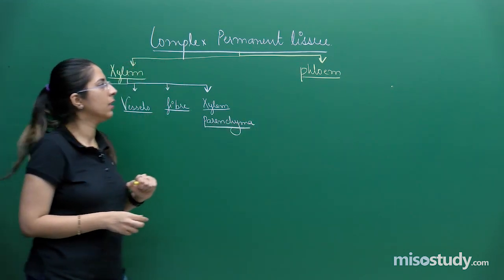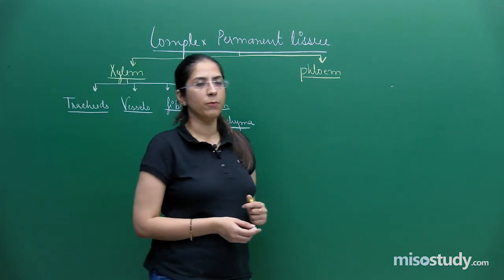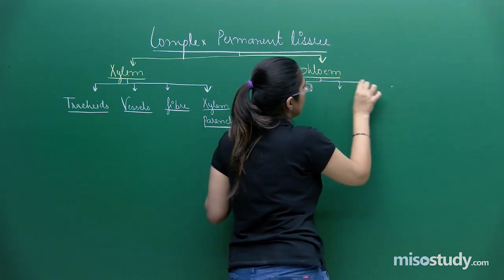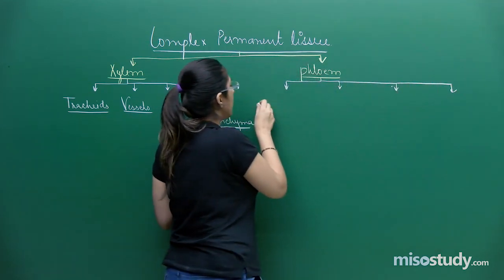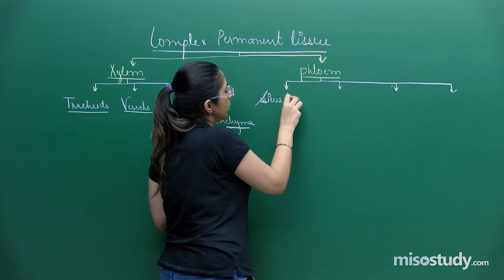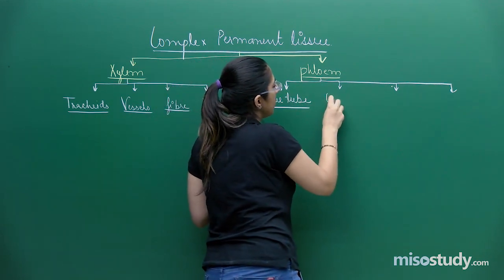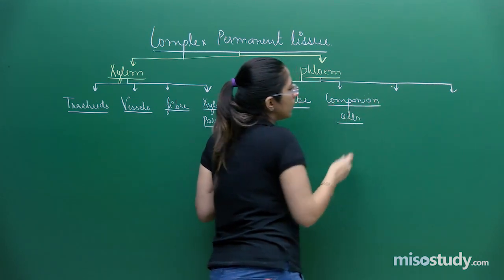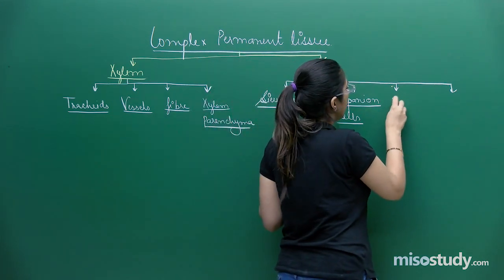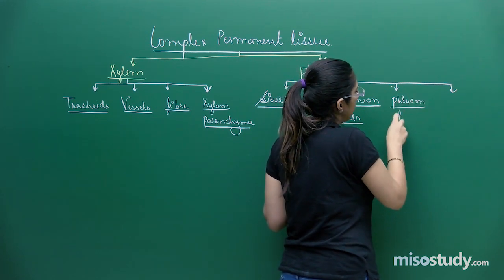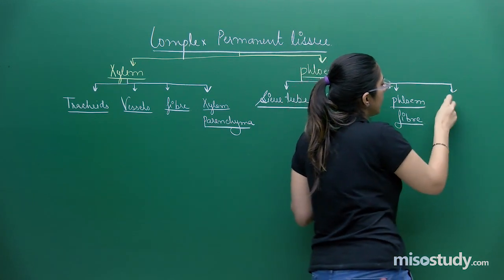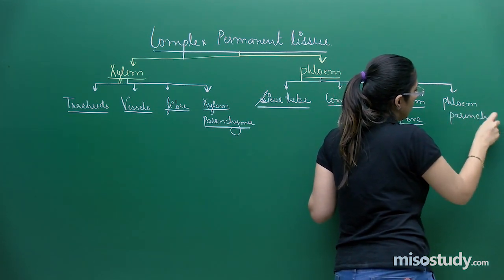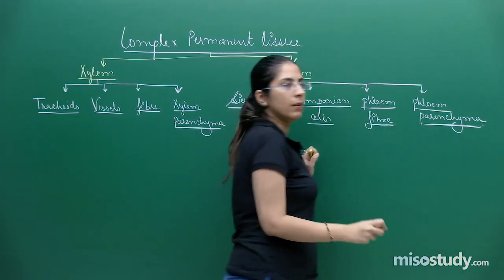We have already completed xylem. Now we move on to phloem, which helps in conduction of food. There are basically four types of phloem cells: the first one is called sieve tube, the second is called companion cells, the third is called phloem fiber, and the fourth is called phloem parenchyma.